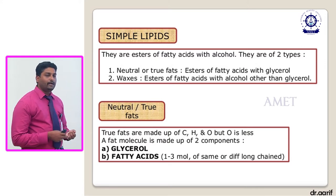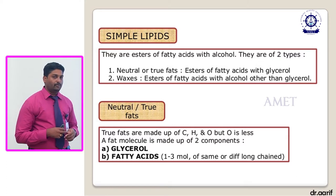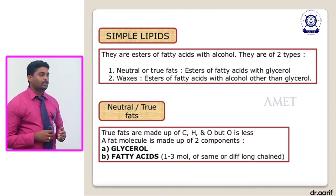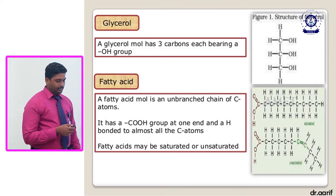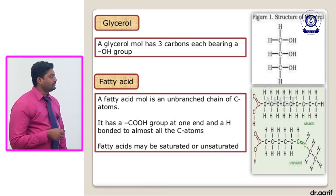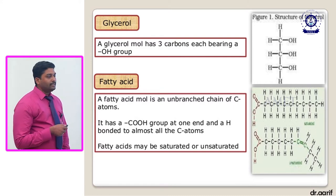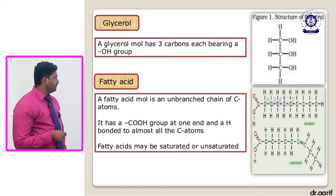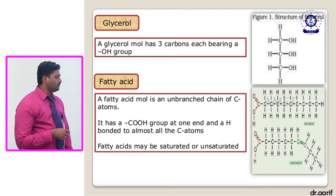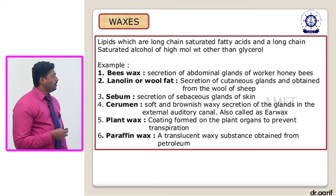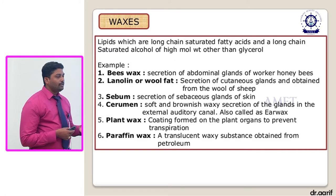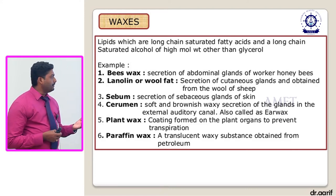A glycerol molecule has three carbons each bearing a single-bond OH group. Fatty acid molecules are unbranched chains of carbon atoms with a single-bond COOH group at one end and hydrogen bonded to almost all carbon atoms. Fatty acids may be saturated or unsaturated. Waxes are lipids with long-chain saturated fatty acids and a long-chain saturated alcohol of high molecular weight other than glycerol. An example is beeswax, a secretion of the abdominal glands of worker honeybees.